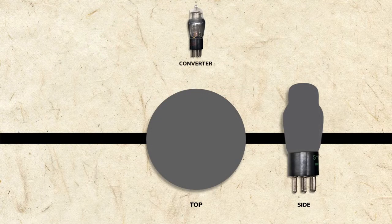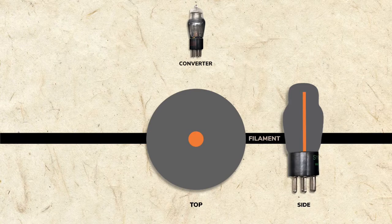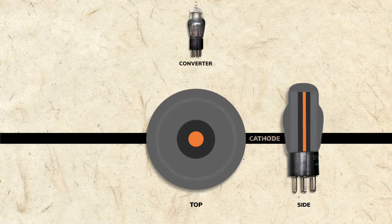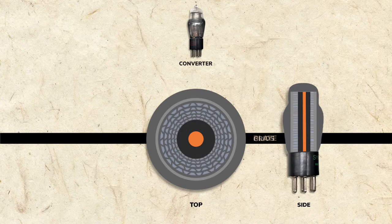Let's take a closer look. As with the rectifier tube, the converter tube has a filament, cathode, and plate. In addition, it has five elements called grids.